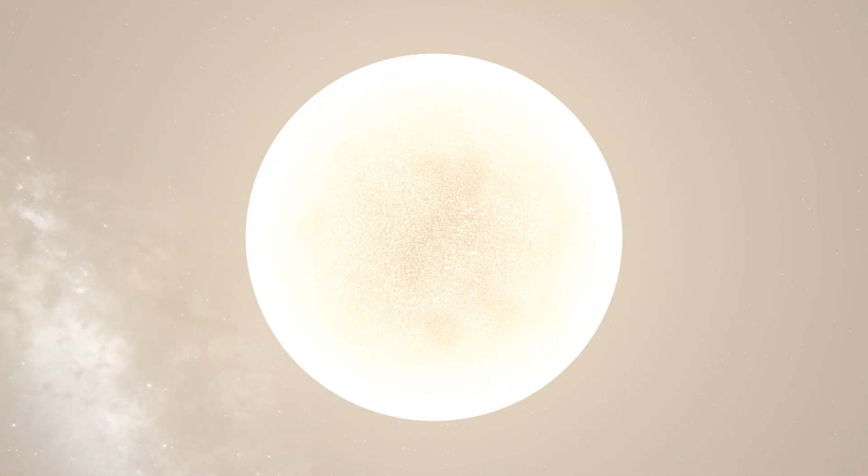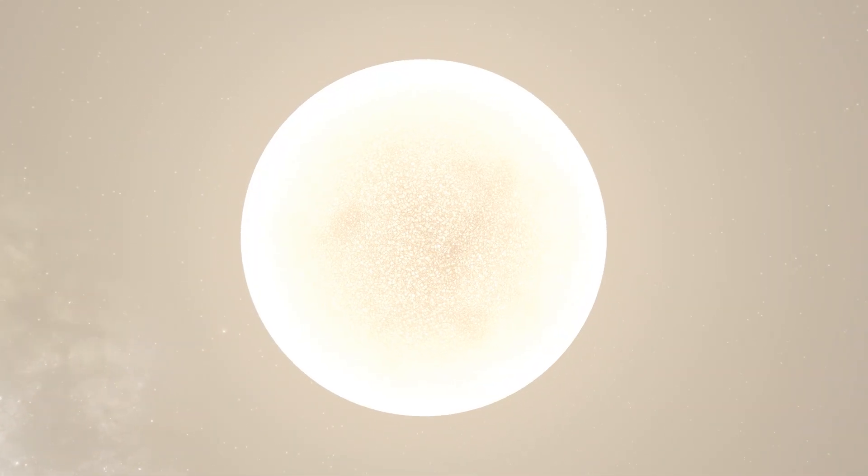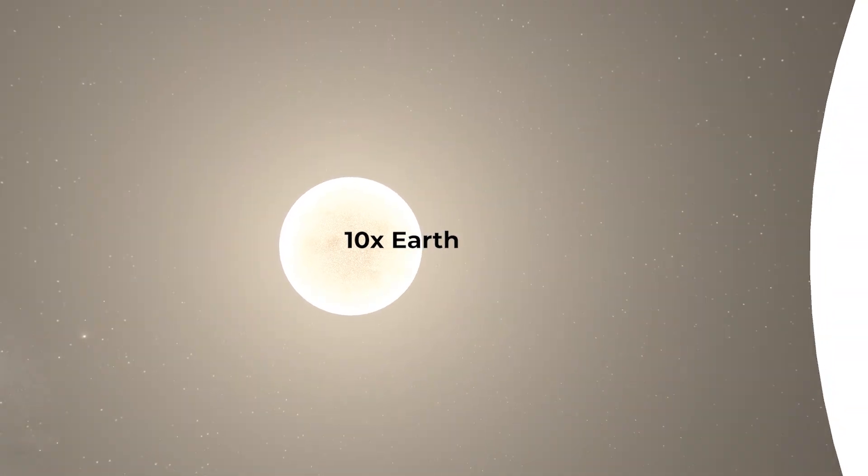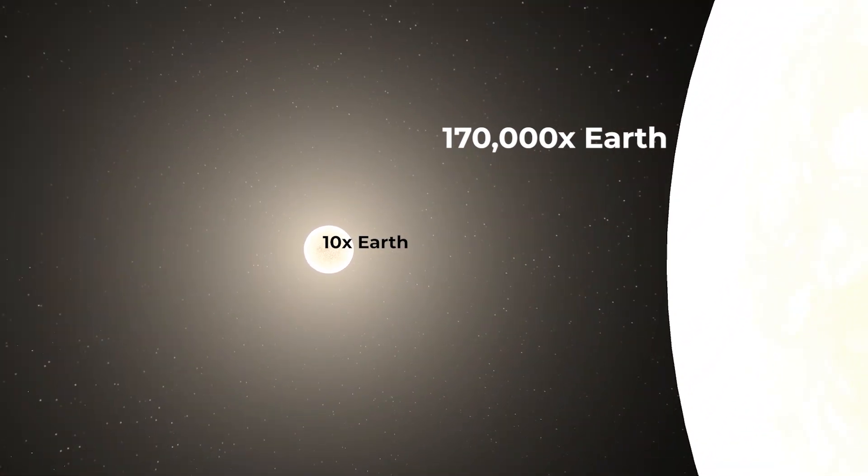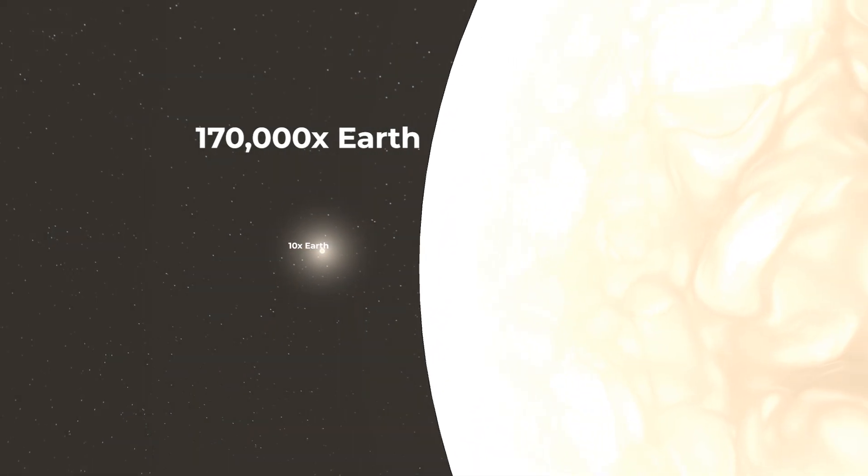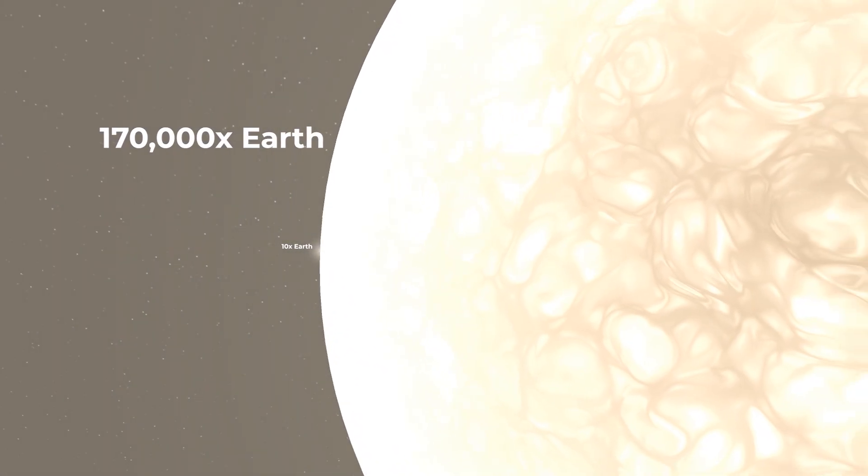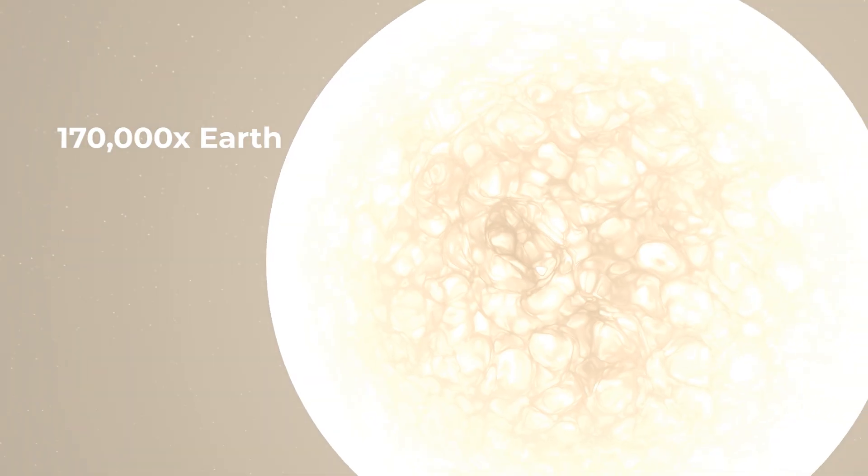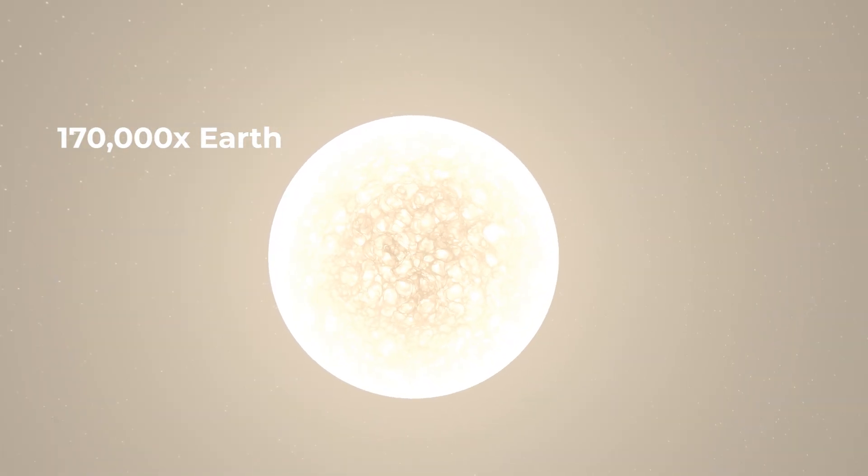Stars are the largest singular structures in our universe, ranging from 10 times the size of the Earth to a staggering 170,000 times. That's right, our Sun is small compared to most stars out there, which is also the reason why astronomers call it a yellow dwarf.